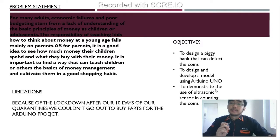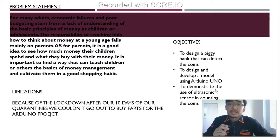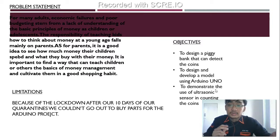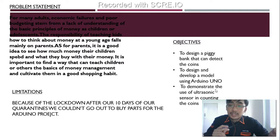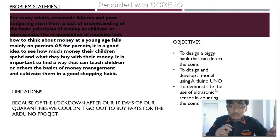For the problem statement: many adult economic failures and poor budgeting stem from a lack of understanding of the basic principles of money as children or adolescents. The responsibility of teaching kids how to think about money from a young age falls mainly on parents. It is a good idea for parents to see how much money their children spend and what they buy. It is important to find a way to teach children the basics of money management and instill good saving habits.